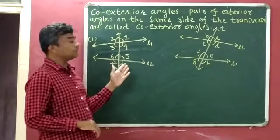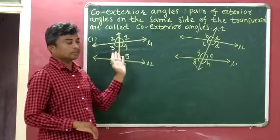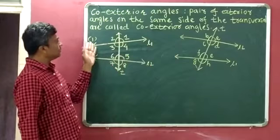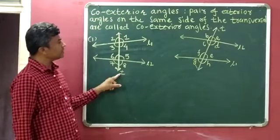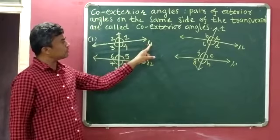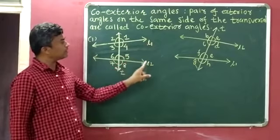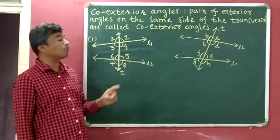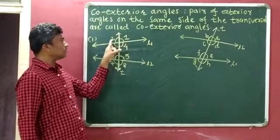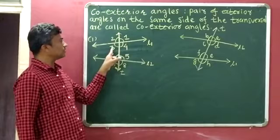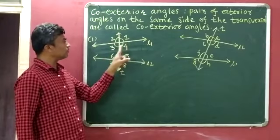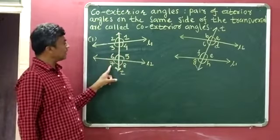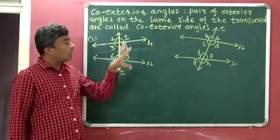I will explain this with the help of two figures. In figure number 1, line T is the transversal of line L1 and line L2, and 8 angles are formed: angle 1, angle 2, angle 3, angle 4, angle 5, angle 6, angle 7, and angle 8.